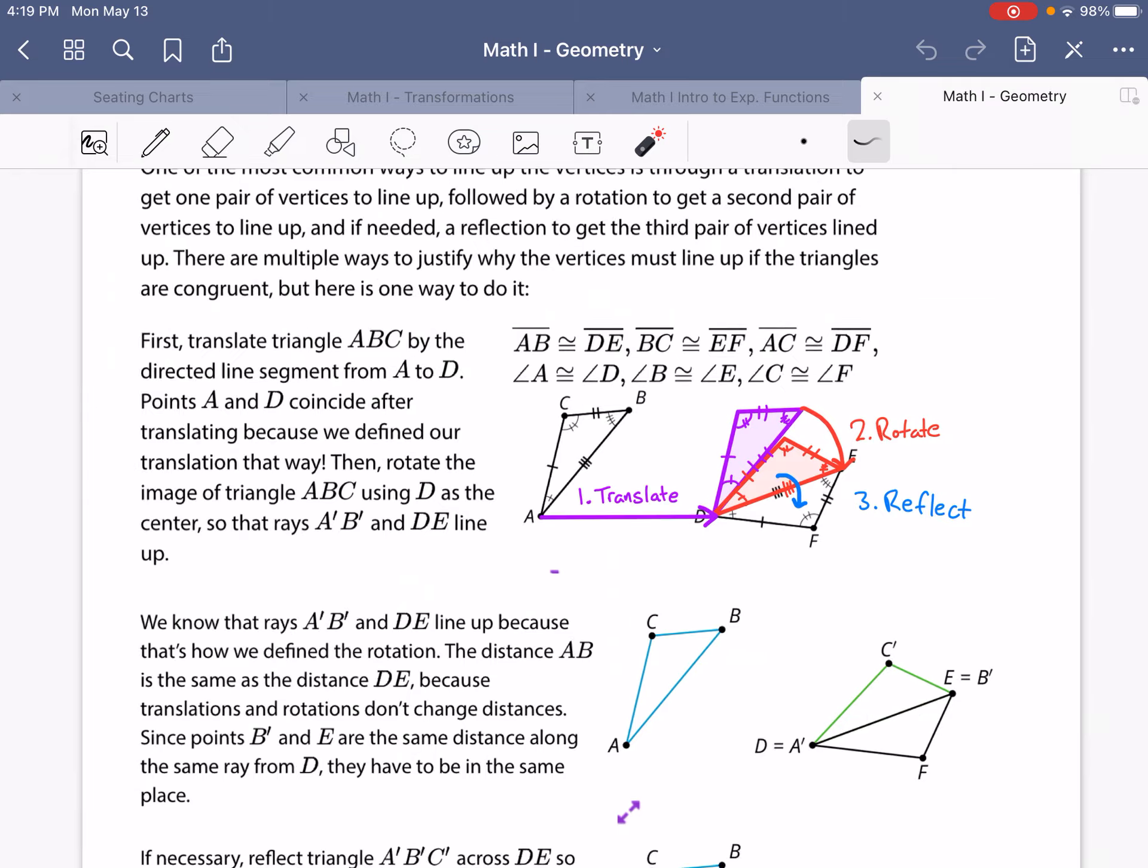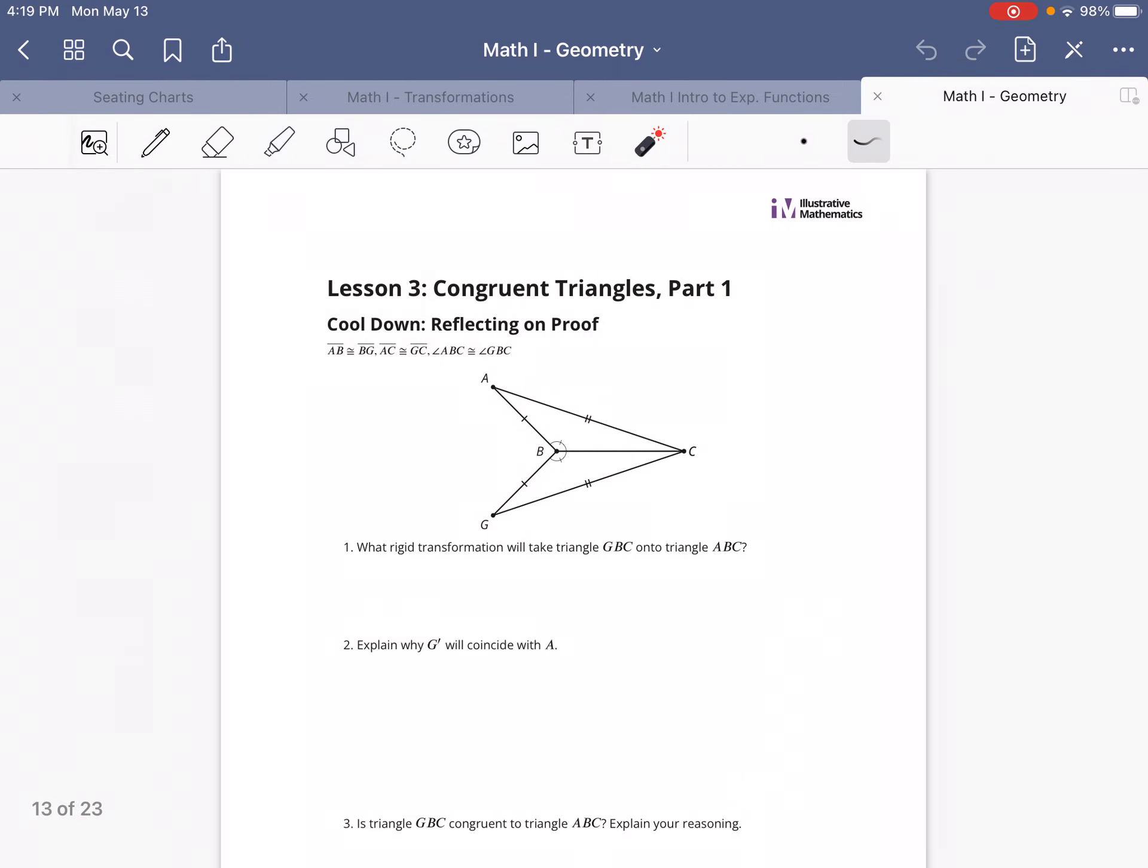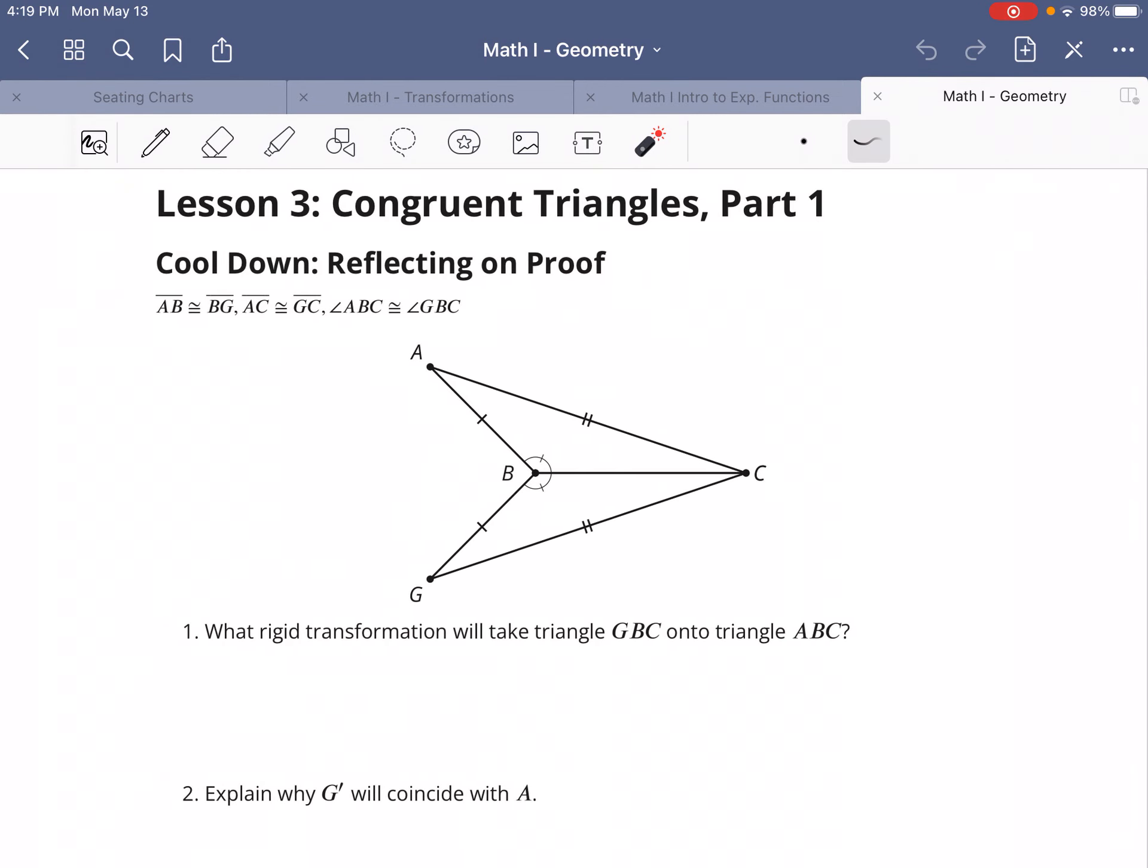Now let's take a look at the cooldown. There's a couple of things that you're told. First of all, AB is congruent to BG, and AC is congruent to GC, and we know that this angle and that angle are congruent to each other.